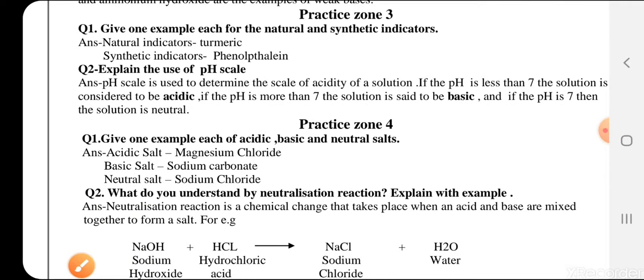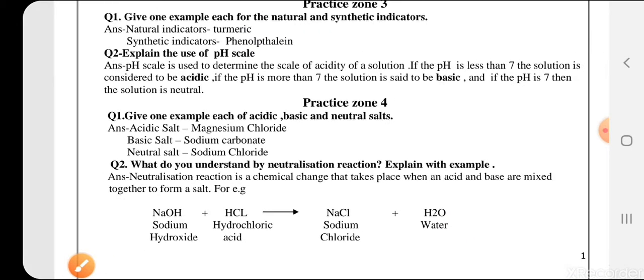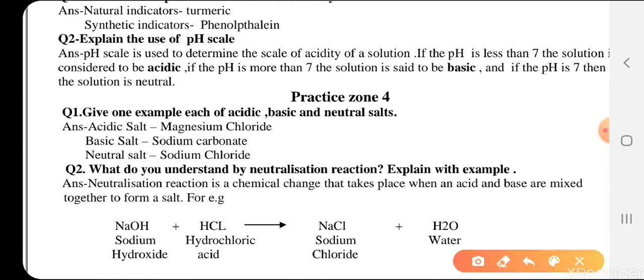Give an example of natural and synthetic indicators. Natural indicators, which are very common in our kitchen and present in our homes, include turmeric, which we can use to differentiate between acid and base. Synthetic indicators are chemically produced in the laboratory, like phenolphthalein.